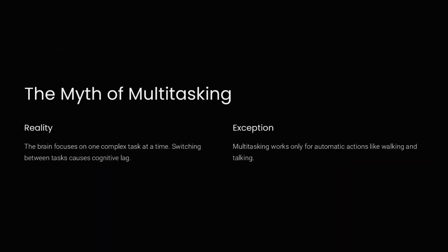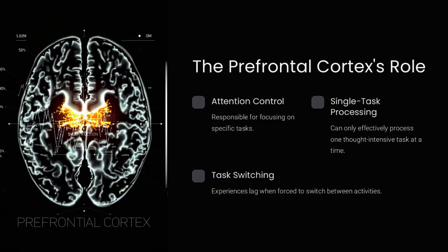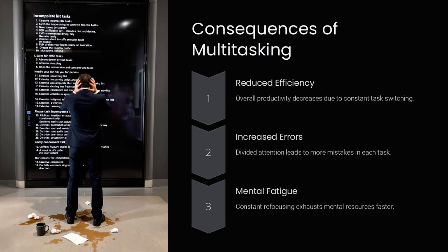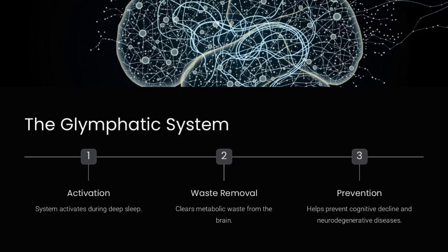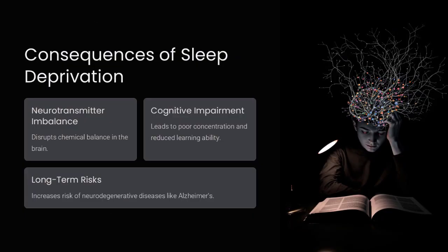If the brain had unlimited energy, perhaps we could think faster or store more information. But evolution has optimized it for survival, not for unlimited intellectual power. This is why cognitive fatigue sets in after intense concentration. Our neurons literally run low on resources.